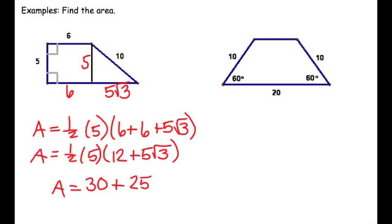So it's going to be 30 plus 25 squared to 3, all over 2.